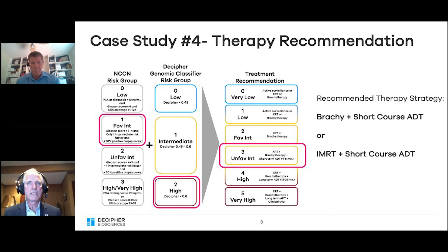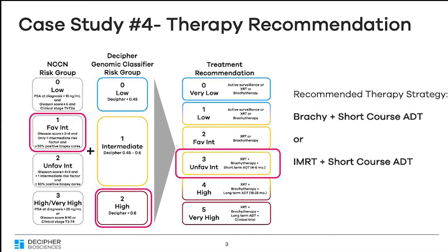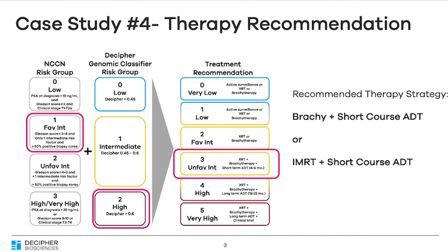We decided that with the favorable intermediate disease and the high Decipher score — a sum of three — radiation with a short course of androgen deprivation therapy would be in his best interest, and that's what indeed he has received.